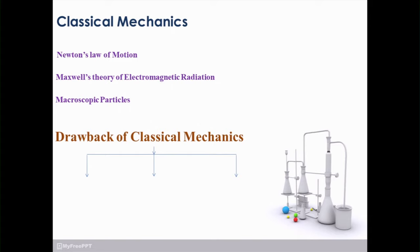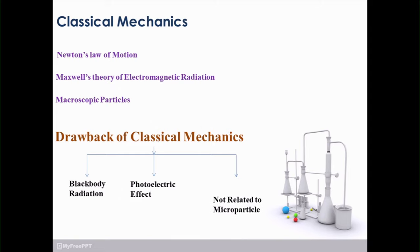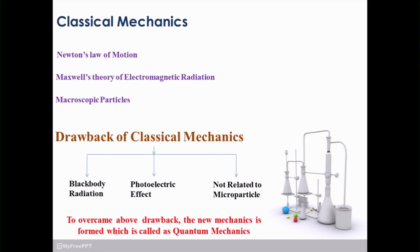The drawbacks of classical mechanics are: first, it is not suitable for black body radiations; second, it is not suitable for the photoelectric effect; and third, it cannot explain microparticles such as electrons, protons, and neutrons. Therefore, to overcome these drawbacks, a new mechanics was formed called quantum mechanics, which overcomes the drawbacks of classical mechanics.